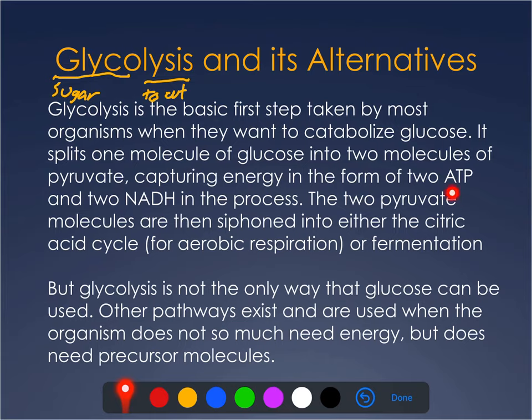These two pyruvates still have a lot of energy on them. And depending on the organism and depending upon the needs of that organism, they can either be siphoned into the citric acid cycle, where more energy can be extracted from them, or they can be recycled through fermentation. Now, there are several different varieties of glycolysis. The first one I'm going to talk about is the traditional glycolysis — it's what most people mean when they say glycolysis. But there are other ways that glucose can be used, and I'm going to talk about some of those alternate glycolytic pathways.